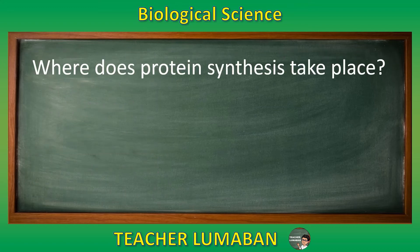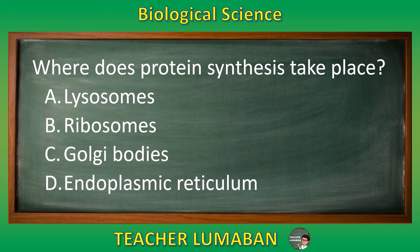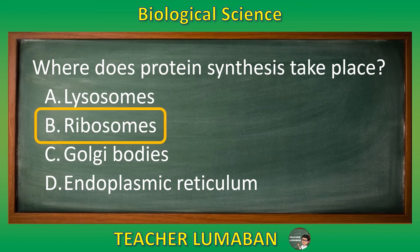Where does protein synthesis take place? Letter A: Lysosomes. Letter B: Ribosomes. Letter C: Golgi bodies. Letter D: Endoplasmic reticulum. The correct answer is letter B — ribosomes. Protein synthesis takes place in the ribosomes.